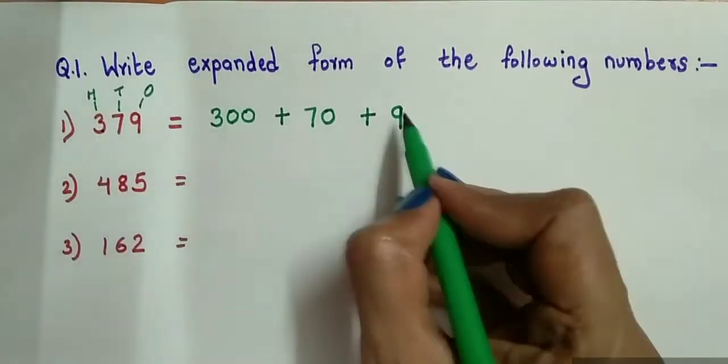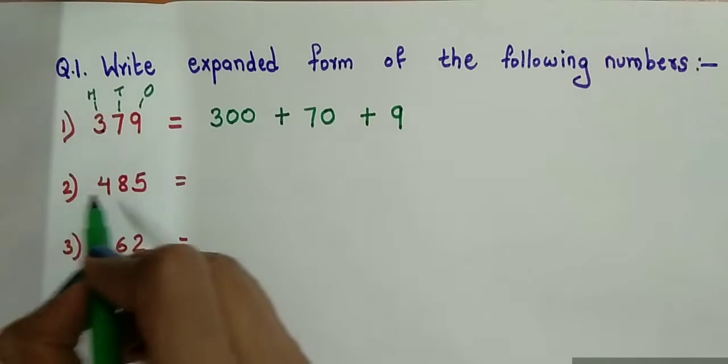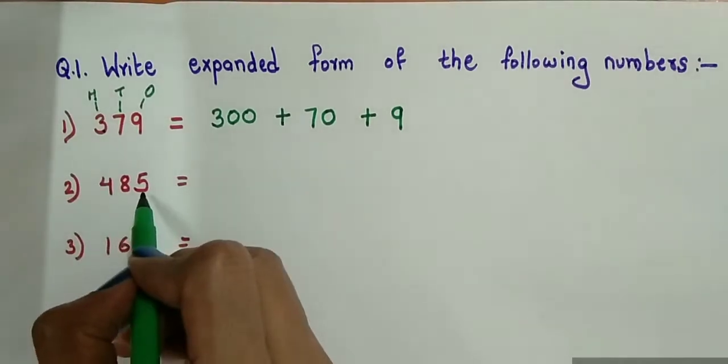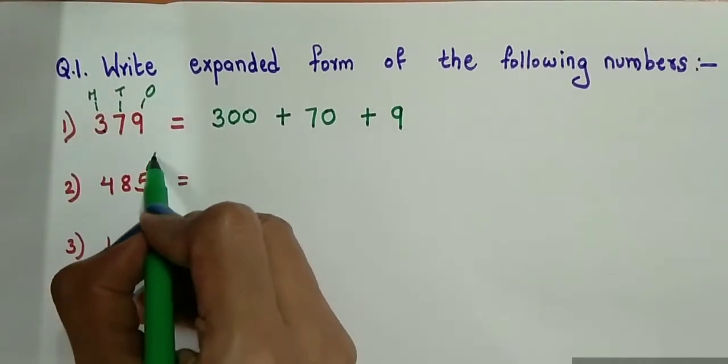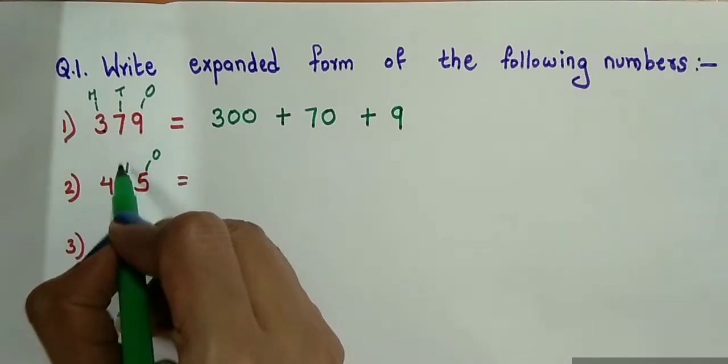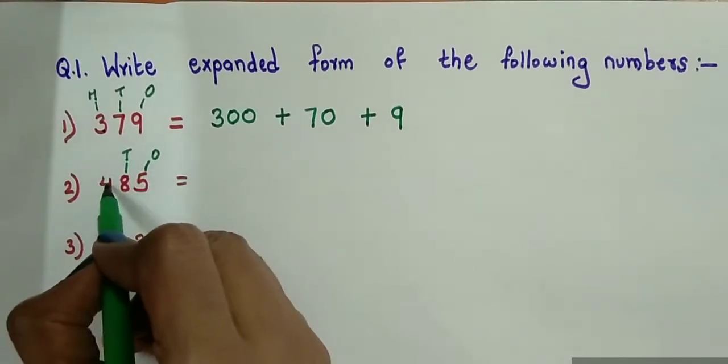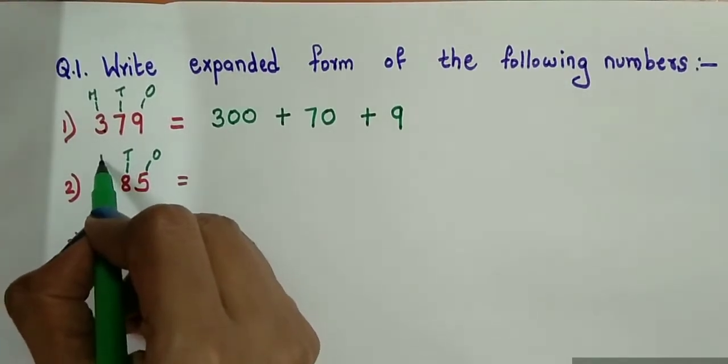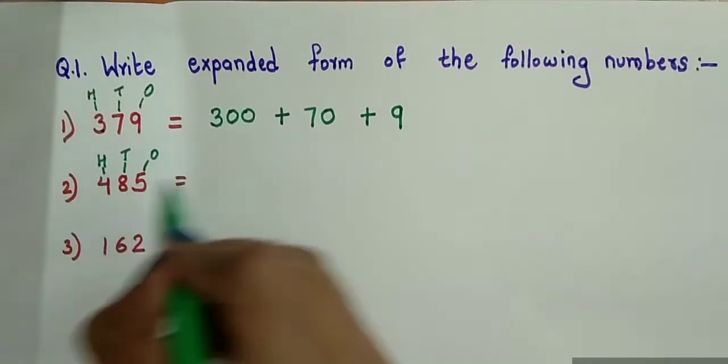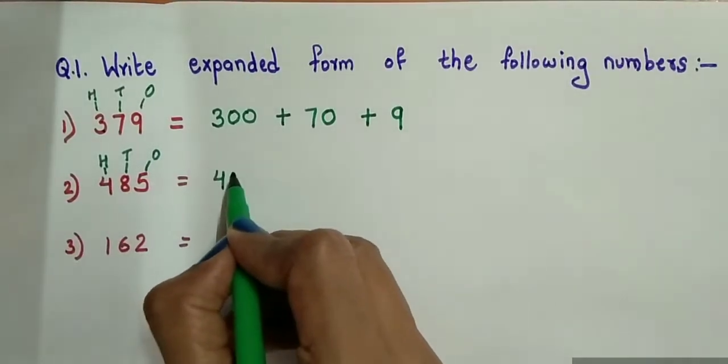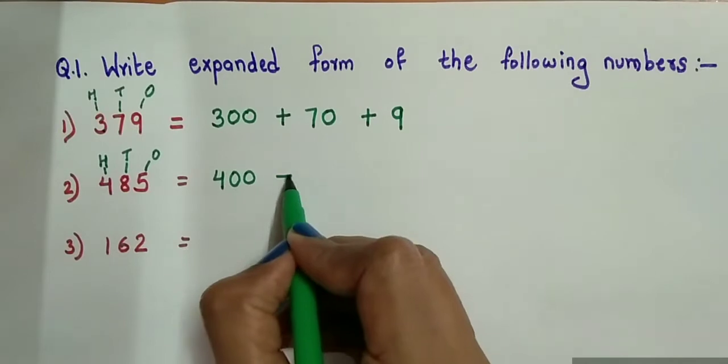Similarly we will solve next question, 485. 5 is at 1's place, 8 is at 10's place, and 4 is at 100's place. Write 4 and add 2 zeros to it for 100's place, add plus sign.